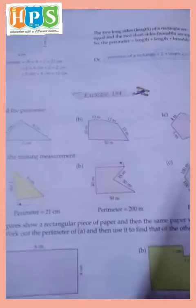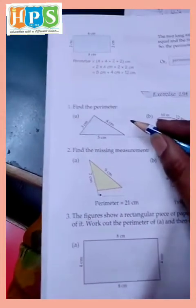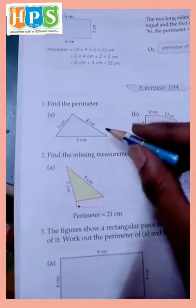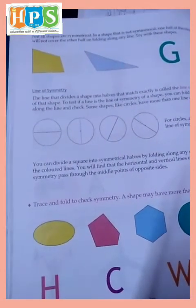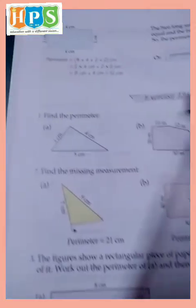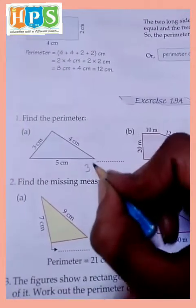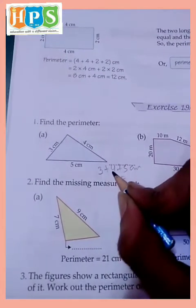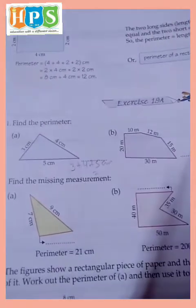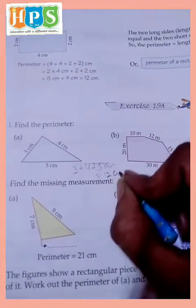Perimeter and area, exercise 19A, perimeter of area. Find the area, this is triangle. 3 plus 4 plus 5 centimeter is equal to 3 and 4, 7, 7 and 5, 12, 12 centimeter perimeter.